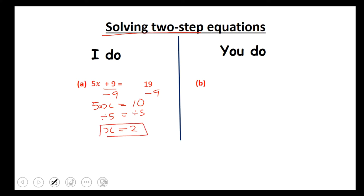Just to double check our answer, we substitute 2 in. You should get 19. So 5 times 2 is 10. Add 9. You get 19.